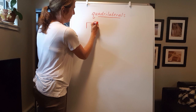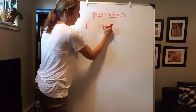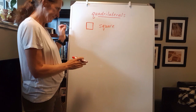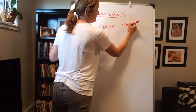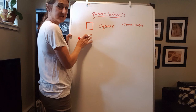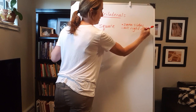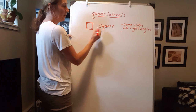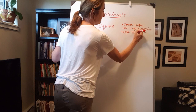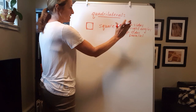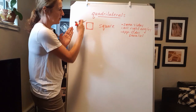The first quadrilateral that a lot of people are familiar with is called a square. What do we notice about a square for its attributes — meaning its features, its characteristics? What you notice is the sides are the same length. They're all the same length if it's a square. The corners are all right angles. And the opposite sides are parallel. Those are the attributes of a square: all sides are the same, all right angles, and opposite sides parallel.